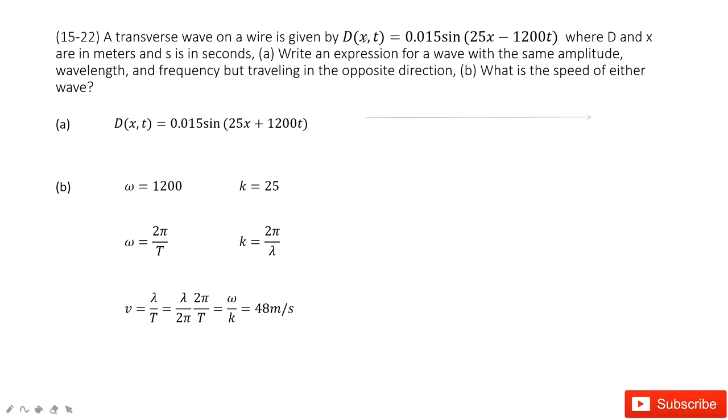In this one you can see we have a wave function D with the variable x and t. Now we know this wave just travels to the right. Now we need to write an expression for the wave that travels in the opposite direction. So you can see initially it travels to the right, then we write an expression that travels to the left.